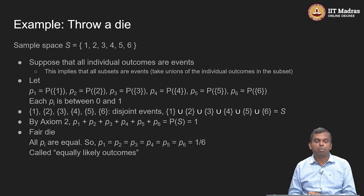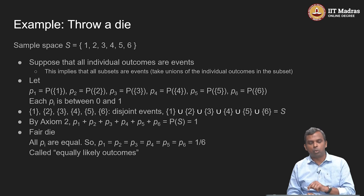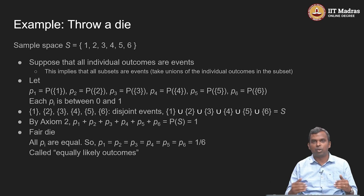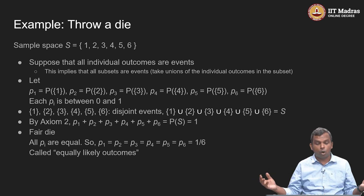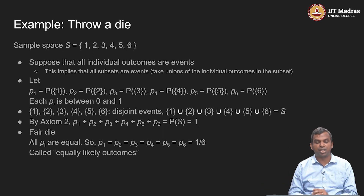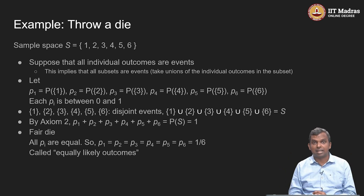Once you have every individual outcome as an event, every event has a probability — the probability function has to put some value on each of these events. Let us say it puts the value p1 on event 1, p2 on event 2, p3 on event 3, and so on. So you have p1, p2, p3, p4, p5, p6 — there are 6 values, all of them are between 0 and 1.